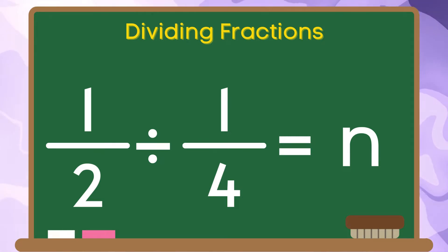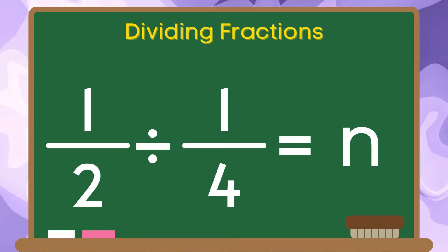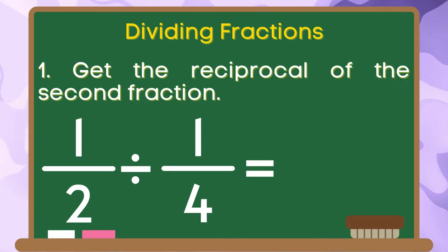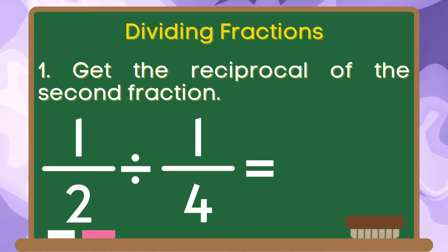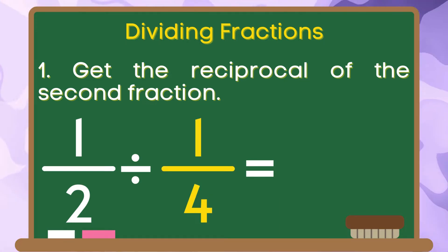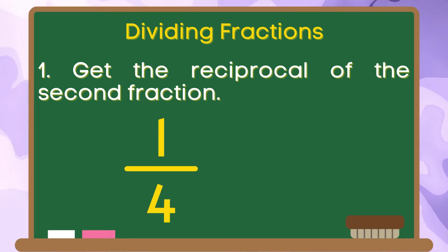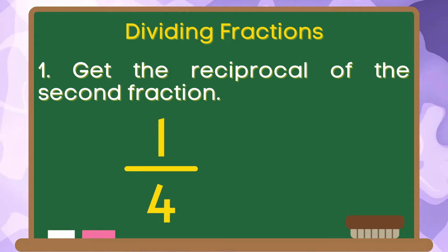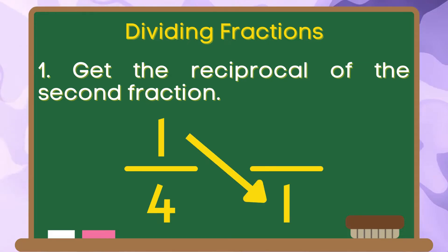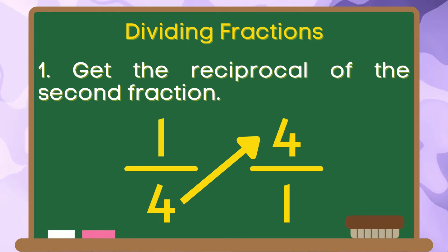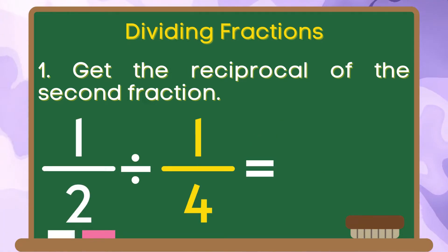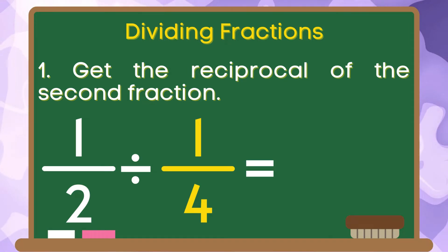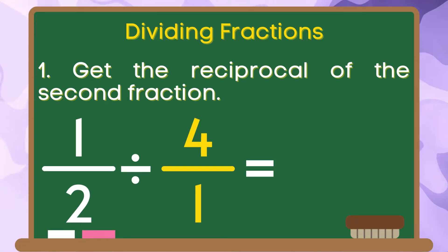Let us have another example: 1 half divided by 1 fourth is equal to n. Let us do step 1 — get the reciprocal of the second fraction. The second fraction is 1 fourth. We are going to change the position of our numerator and denominator. 1 will be the denominator and 4 will be the numerator. Therefore, the reciprocal of 1 fourth is 4 over 1.